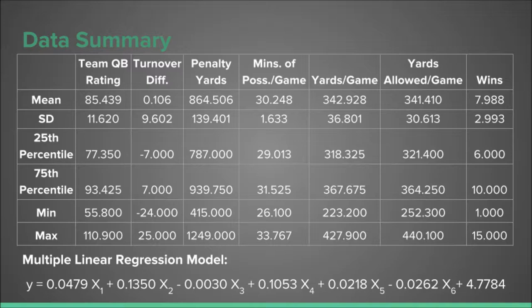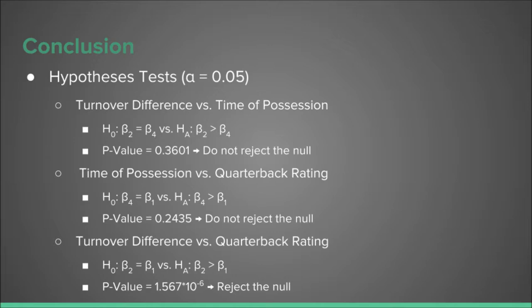The resulting beta of the turnover differential is the highest, as was somewhat expected based on the singular linear regressions that we ran. However, the beta for time of possession is the second largest by a decent margin. This tells us that there may have been some omitted variable bias in the singular regressions, as the R-squared for time of possession was rather low compared to some of the other variables.